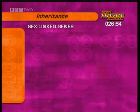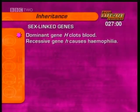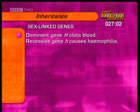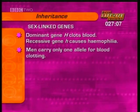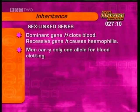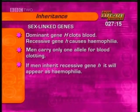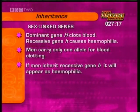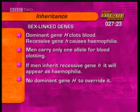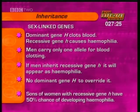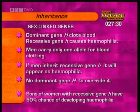For example, one of the genes carried on the X chromosome is for blood clotting. The dominant gene, capital H, clots blood, while the recessive gene, small h, causes haemophilia. Men carry only one allele for blood clotting because the Y chromosome is shorter and is missing this gene. So if men inherit the recessive gene, small h, it will be expressed as haemophilia, because there isn't another dominant gene, capital H, to override it. Sons born to women who carry the recessive small h gene have a 50-50 chance of developing the disease.